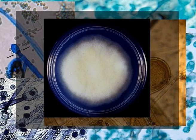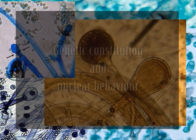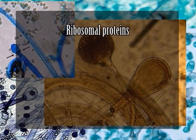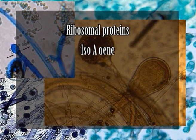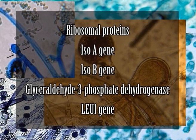Colonies of Mucor grow rapidly at 25 to 30 degrees Celsius and quickly cover the surface of the agar in culture medium. Regarding genetic constitution and nuclear behavior, many of the proteins and genes of Mucor have been sequenced, including ribosomal proteins, genes involved in isoprenoid biosynthesis, the iso-a gene, iso-b gene, gene encoding glyceraldehyde-3-phosphate dehydrogenase, and the leo-1 gene.